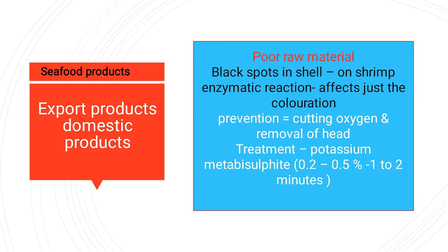One major problem in the seafood industry is poor raw material. Black spots are a major problem seen on shrimp shells. This is because of enzymatic reactions that affect coloration, causing black spot formation on the shell. Prevention includes cutting off oxygen supply and removal of the head to avoid black spot formation on shrimp.